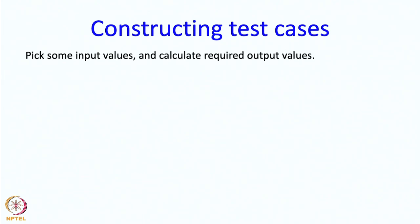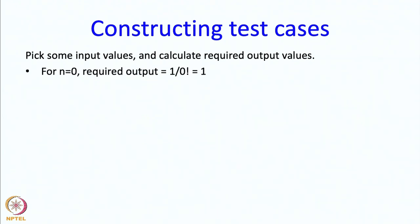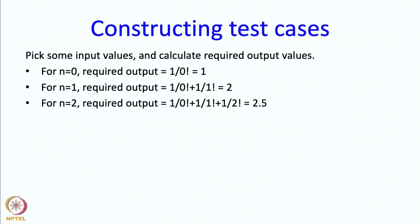The next step is to construct the test cases. So here you just pick some input values and you calculate the required output values. So, for example, if we say n is 0, then the required output is 1 over 0 factorial or 1. If we say n is 1, the required output is 1 over 0 factorial plus 1 over 1 factorial which is equal to 2. If n is 2, then the required output is 1 over 0 factorial plus 1 over 1 factorial plus 1 over 2 factorial which is 2.5.